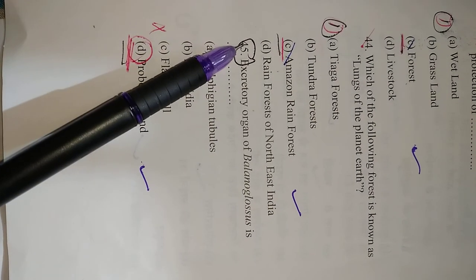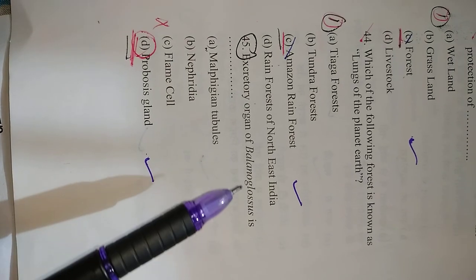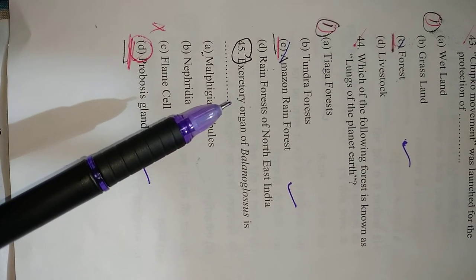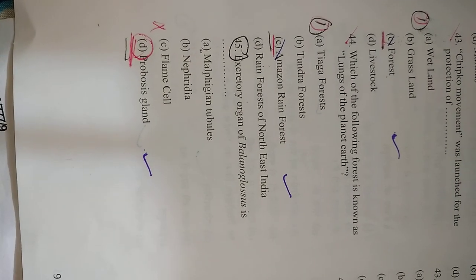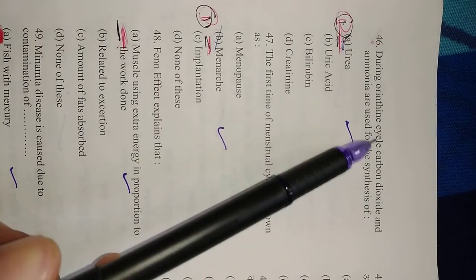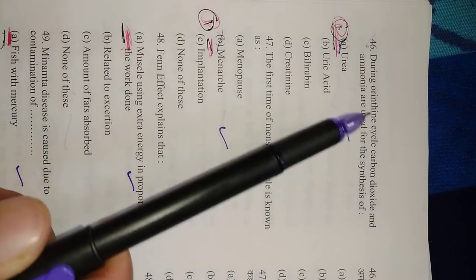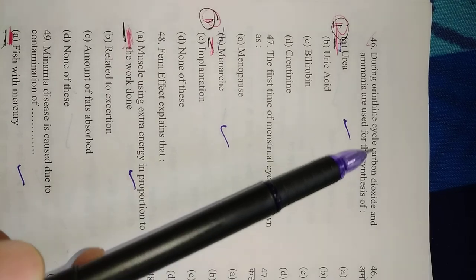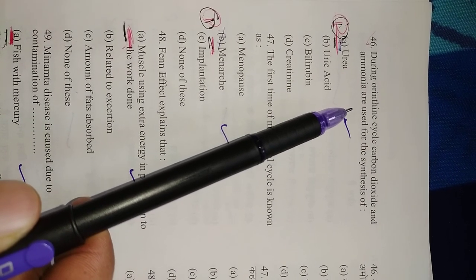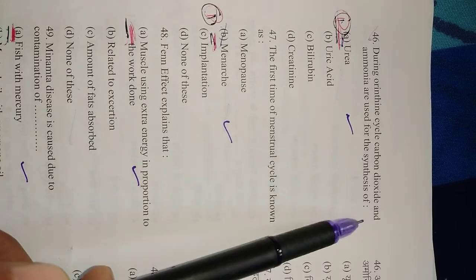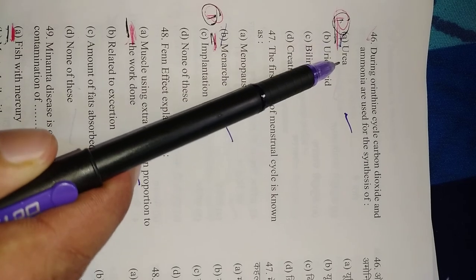Question number 45: Excretory organ of Balanoglossus is—they have glomerulus in the proboscis gland. So right option is D, proboscis gland. Question number 46: During ornithine cycle, carbon dioxide and ammonia are used for the synthesis of—the ornithine cycle or the urea cycle, where carbon dioxide and ammonia are used for the synthesis of urea. Right option is A.